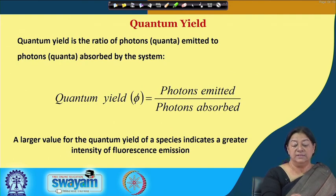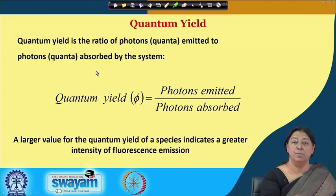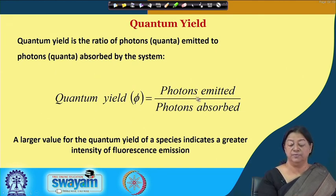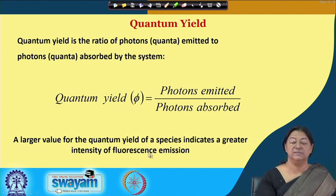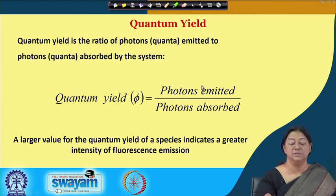Quantum yield is the ratio of the photons emitted to the photons absorbed by the system. A larger value for the quantum yield indicates a greater intensity of fluorescence emission, because we have a larger number of photons emitted relative to the photons absorbed.